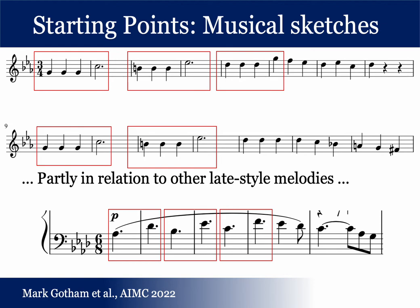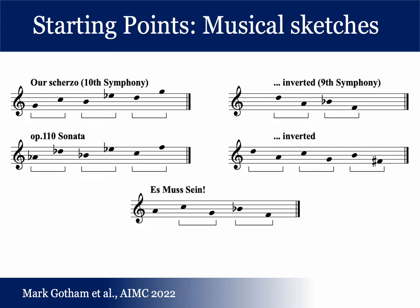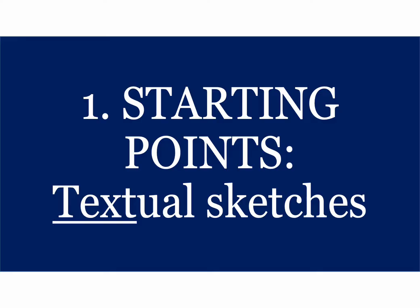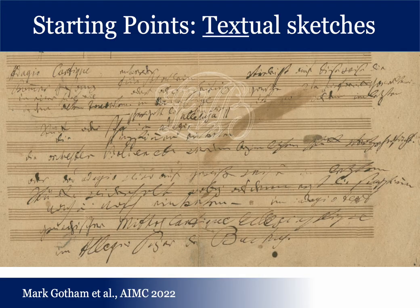This is preferred partly in relation to other late-style melodies — perhaps the slow movement of the Ninth, the fugal theme in the Opus 110 Sonata, and perhaps even the Esmeral Seinum. Considerably more deduction is needed to make any sense of Beethoven's textual sketches in planning this work. In this very exciting early sketch, Beethoven sets out many ideas, possibly for the Ninth, possibly for the Tenth, possibly for no work at all.